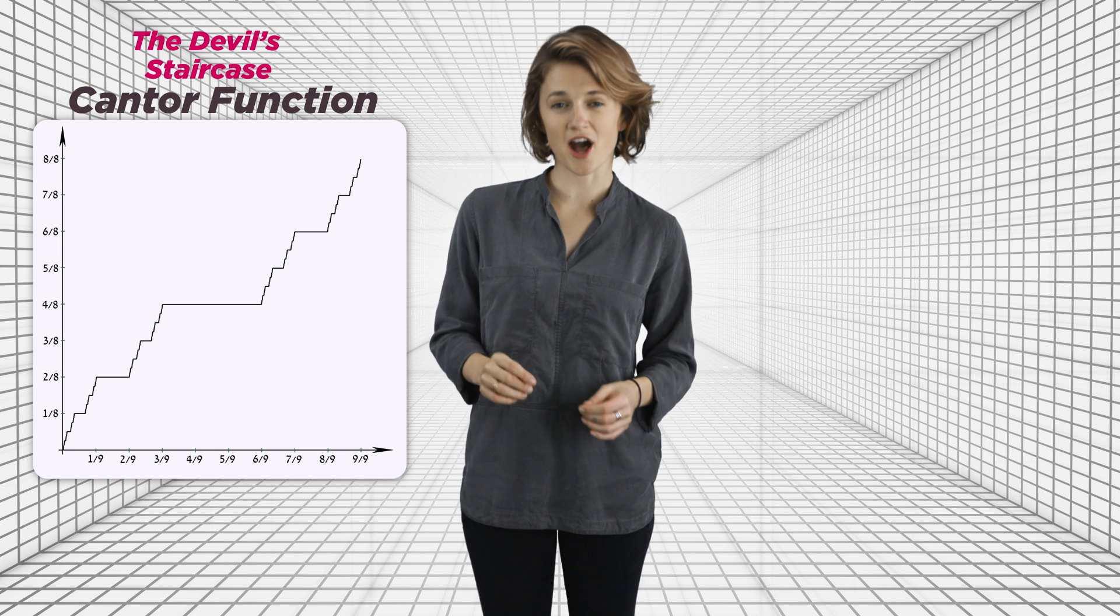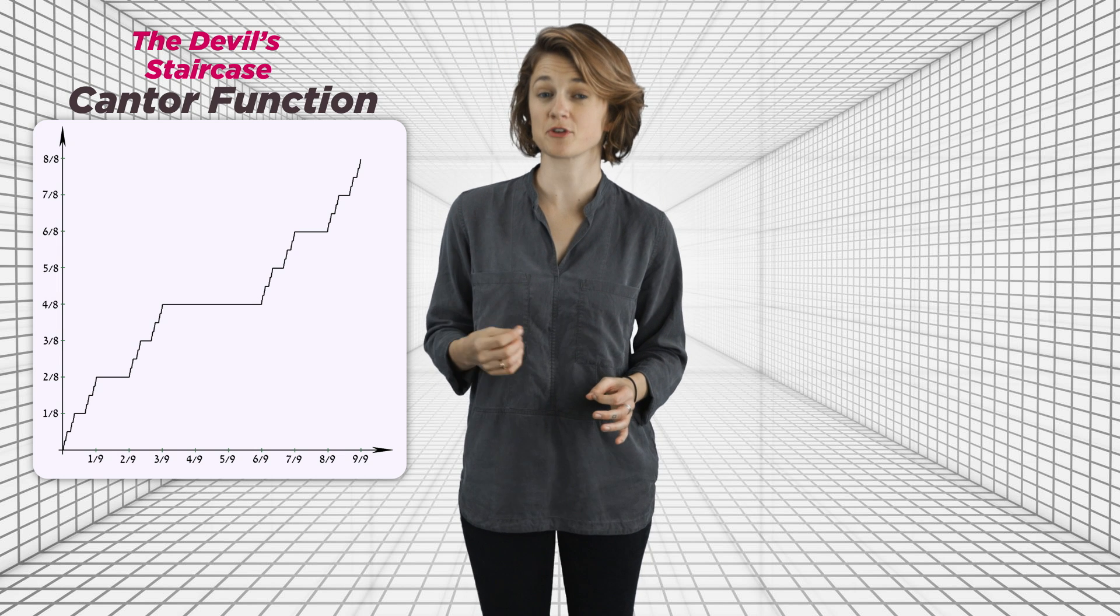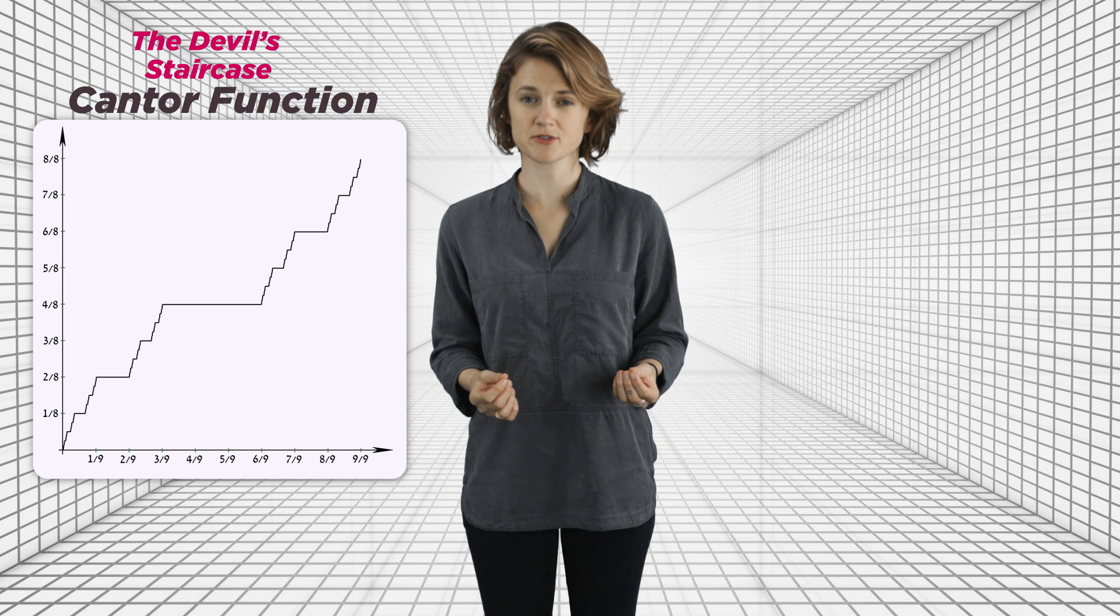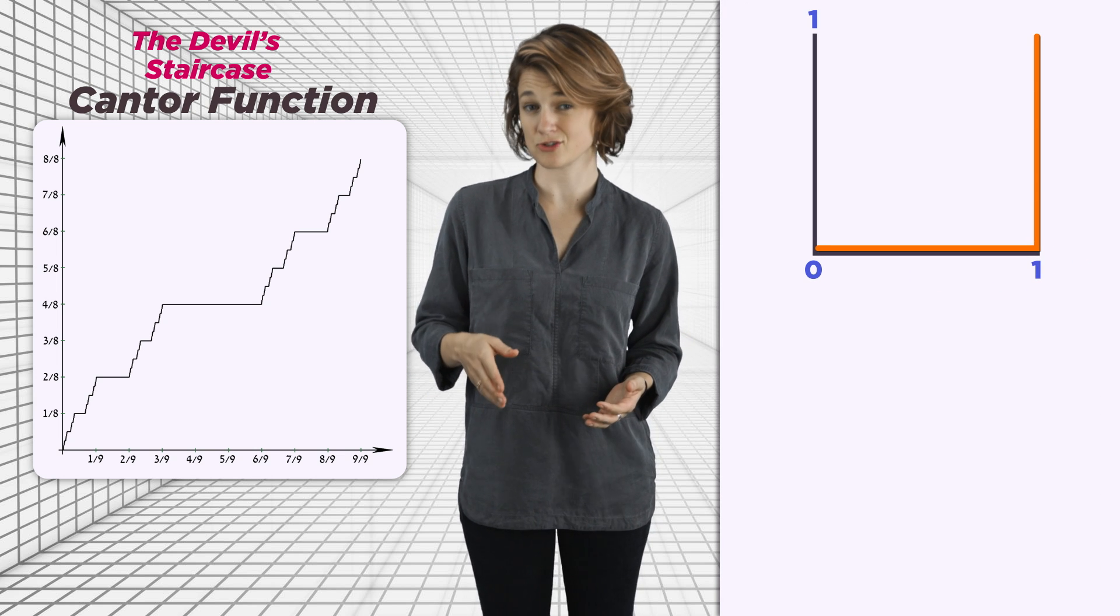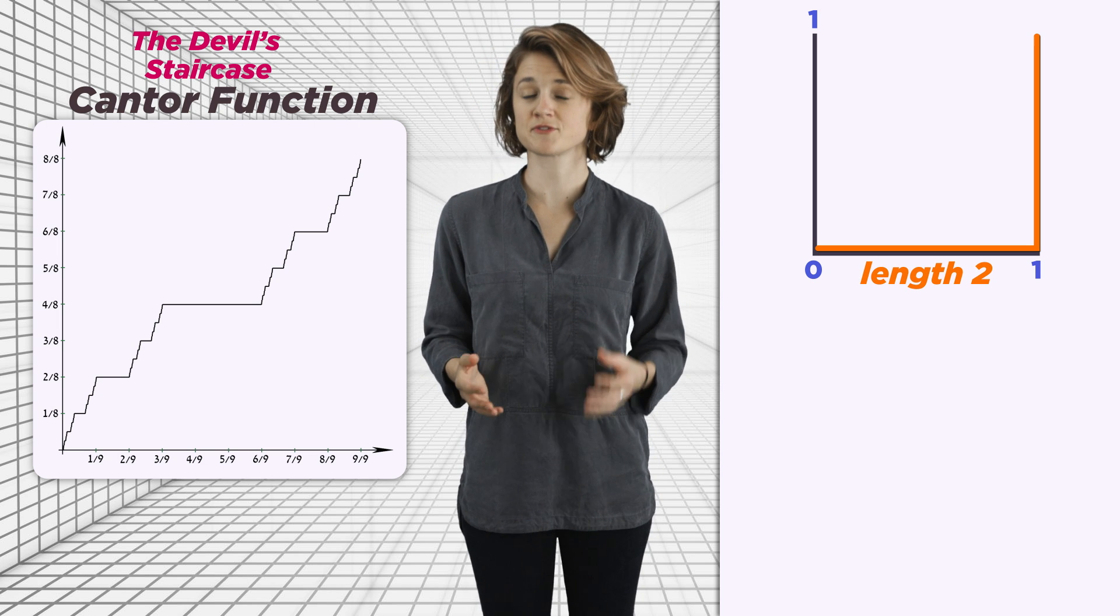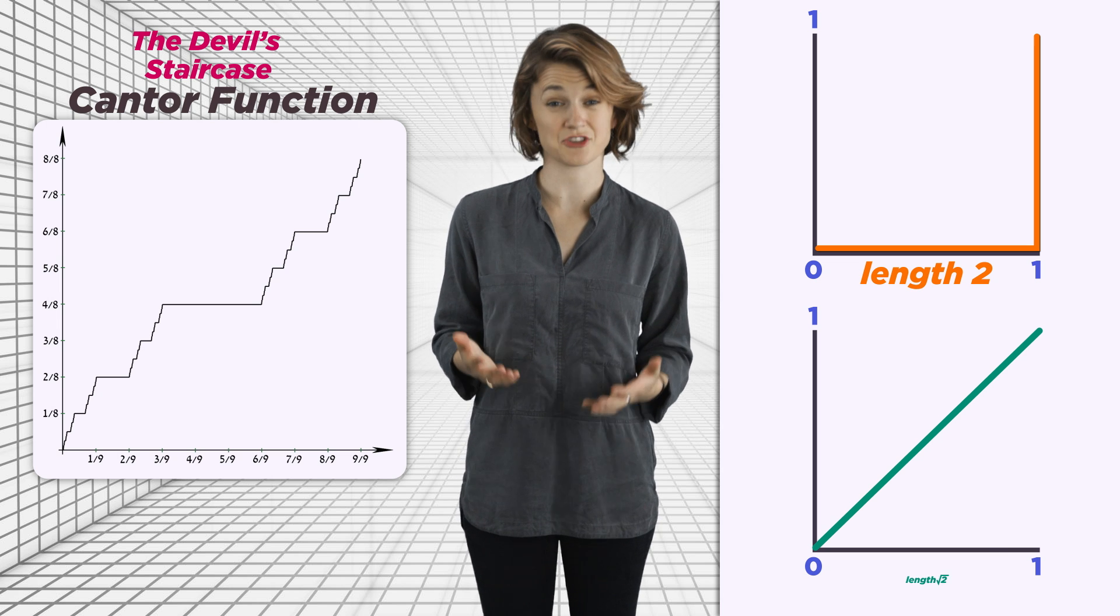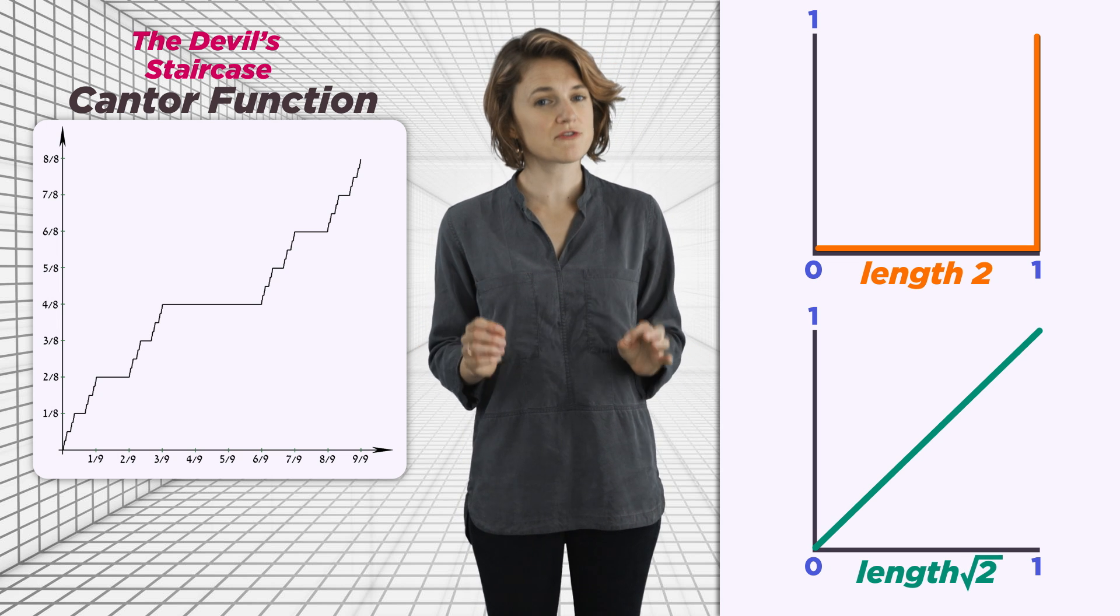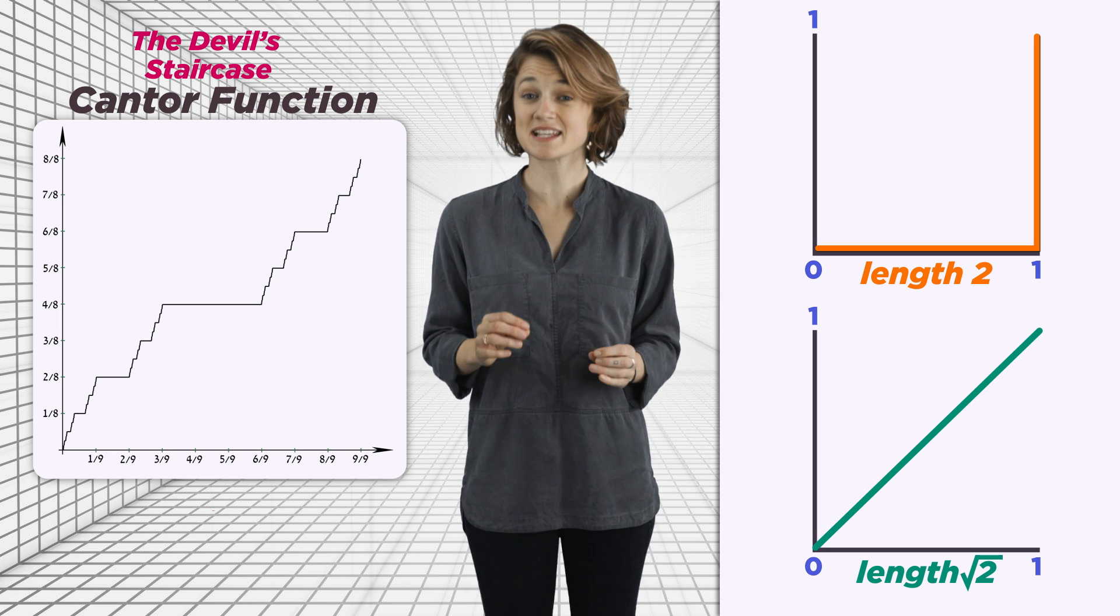One last oddity of the Cantor function. How long is the curve defined by the graph of the Cantor function? A curve that moves from (0, 0) to (1, 1) by moving directly horizontally and then directly vertically has length 2. A curve that moves from (0, 0) to (1, 1) by moving in a diagonal straight line has length square root of 2. What about the Cantor function? The Cantor function feels like a mix of these, but it turns out it has length 2.